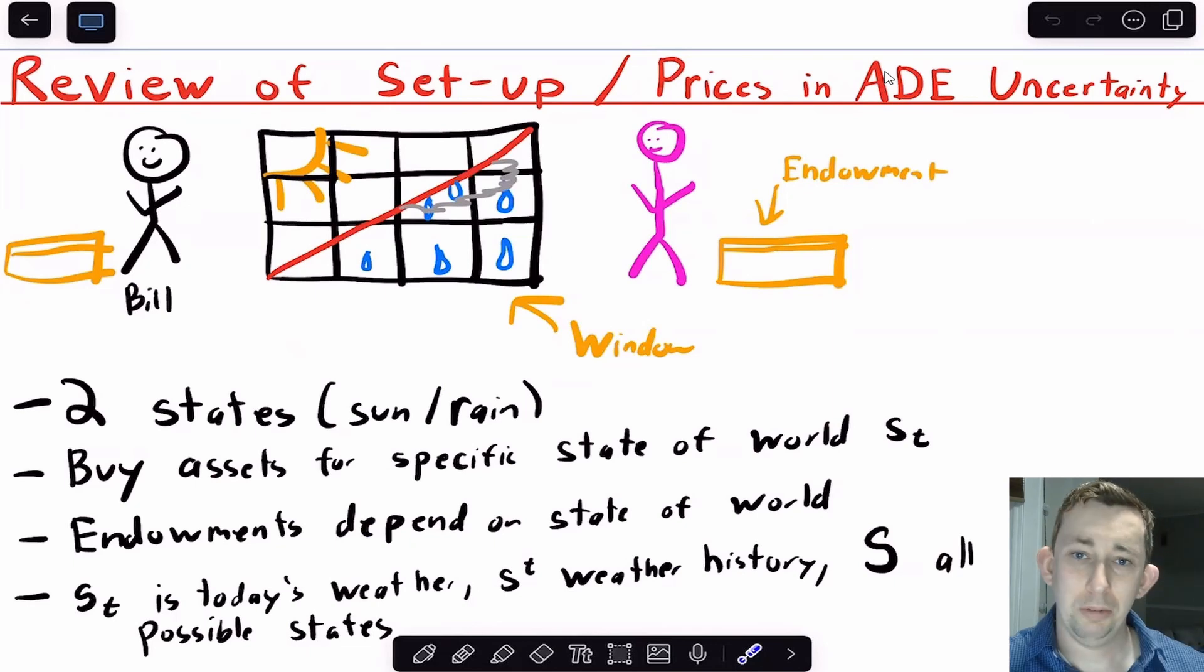So you want to match the good to the state. And we are using that example to get behind the idea that one good in two different states of the world is basically the same as two different goods. And it's helpful to think about that as two different goods. So we have two states of the world. We're buying assets for the specific state of the world. So if I want a coconut tomorrow, that's not enough. I need to specify I want a dry coconut. I want a coconut when it's sunny tomorrow. And that's different than a coconut for tomorrow if it's raining, because that's going to be sort of a rain-resistant coconut. So they're different goods. They're not actually different goods. We're just calling them different goods to really hammer the idea that one good in two different states of the world is basically two different goods.